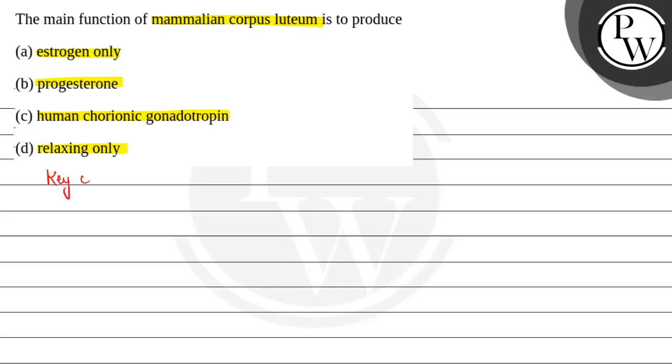So the key concept here is corpus luteum. Corpus luteum ovary mein banta hai from Graafian follicle.